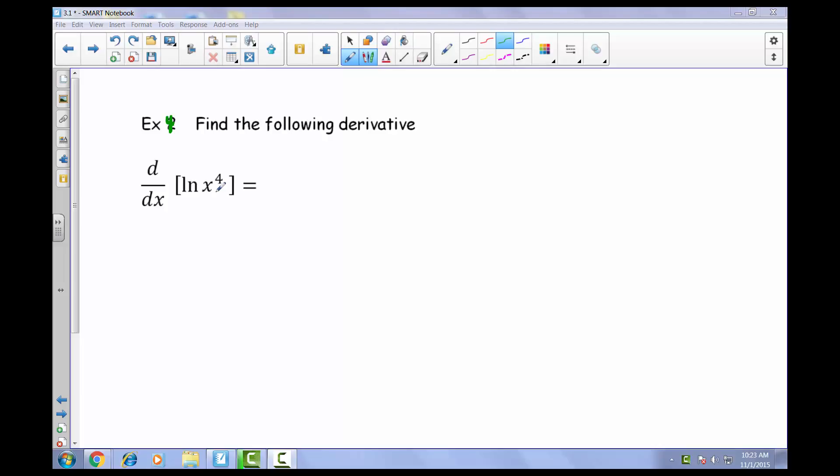Now, believe it or not, this is actually a very misleading type of problem because parentheses absolutely matter here. We notice that we don't have any parentheses at all, and as a result, when we're looking at the natural log of x to the 4th, this 4 is actually not considered to be part of this value of the function. And as a result, we can use our power properties with logs and throw this 4 in front of our natural log.